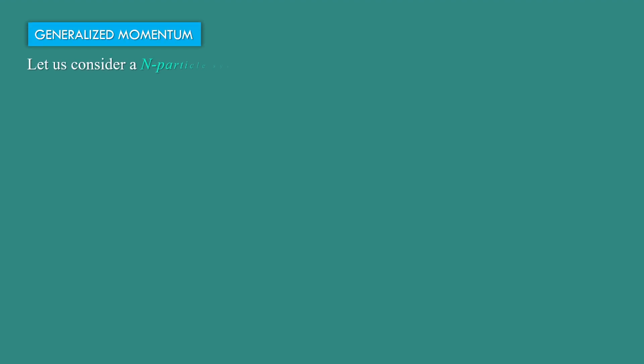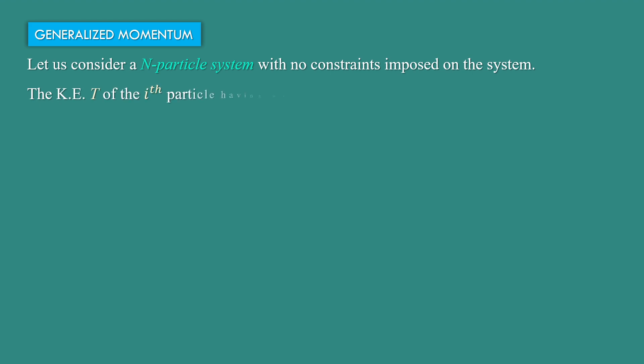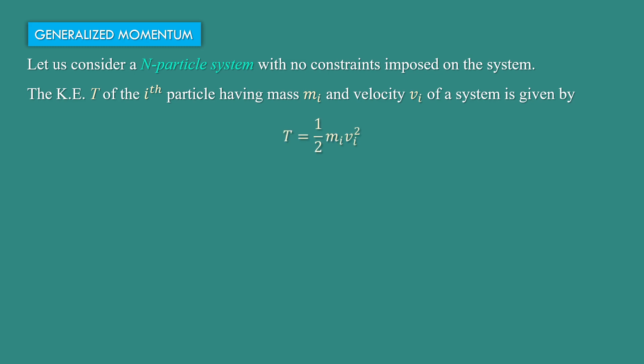Generalized Momentum. Let us consider an n-particle system with no constraints imposed on the system. The kinetic energy T of the i-th particle having mass Mᵢ and velocity Vᵢ is given by T = ½MᵢVᵢ². Now Vᵢ can be written as dxᵢ/dt, so T = ½Mᵢ(dxᵢ/dt)² = ½Mᵢẋᵢ². This is equation number 1.